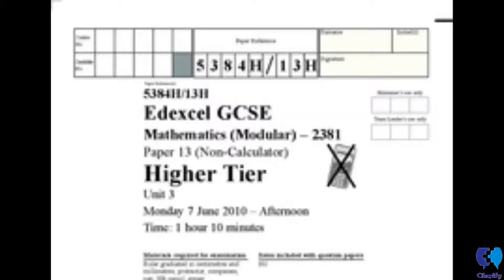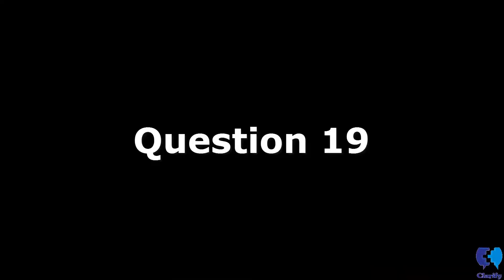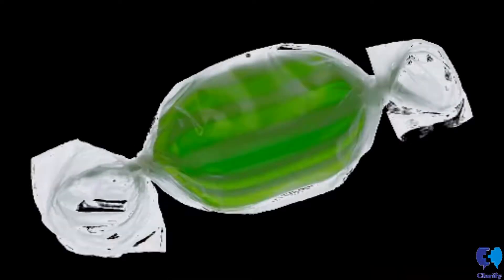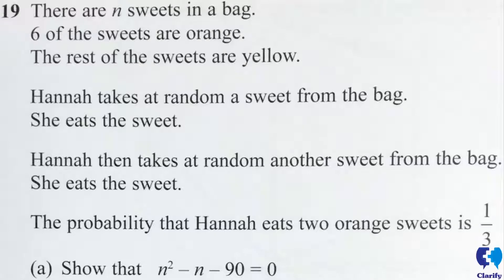Earlier this month, there was a question that stumbled many completing the higher tier of the AQA Maths GCSE. Question 19 was a question about Hannah and a sweet dilemma. The question reads: there are n sweets in a bag, 6 of the sweets are orange, the rest of the sweets are yellow. Hannah takes at random a sweet from the bag and eats it. Hannah then takes at random another sweet from the bag and eats it. The probability that Hannah eats two orange sweets is one third. Show that n squared minus n minus 90 equals zero.